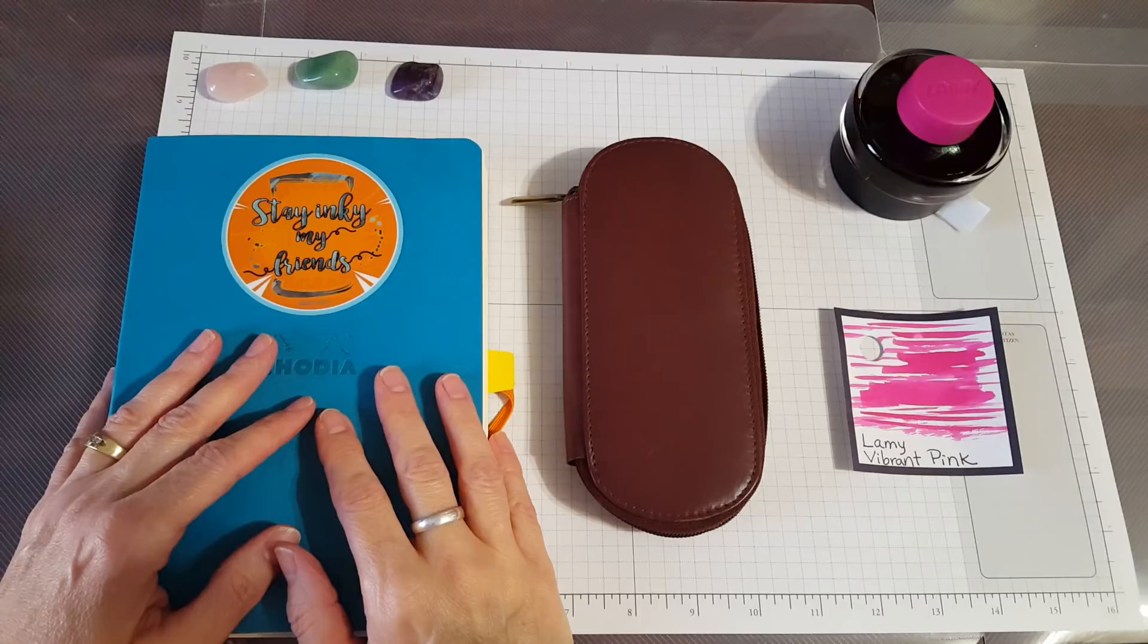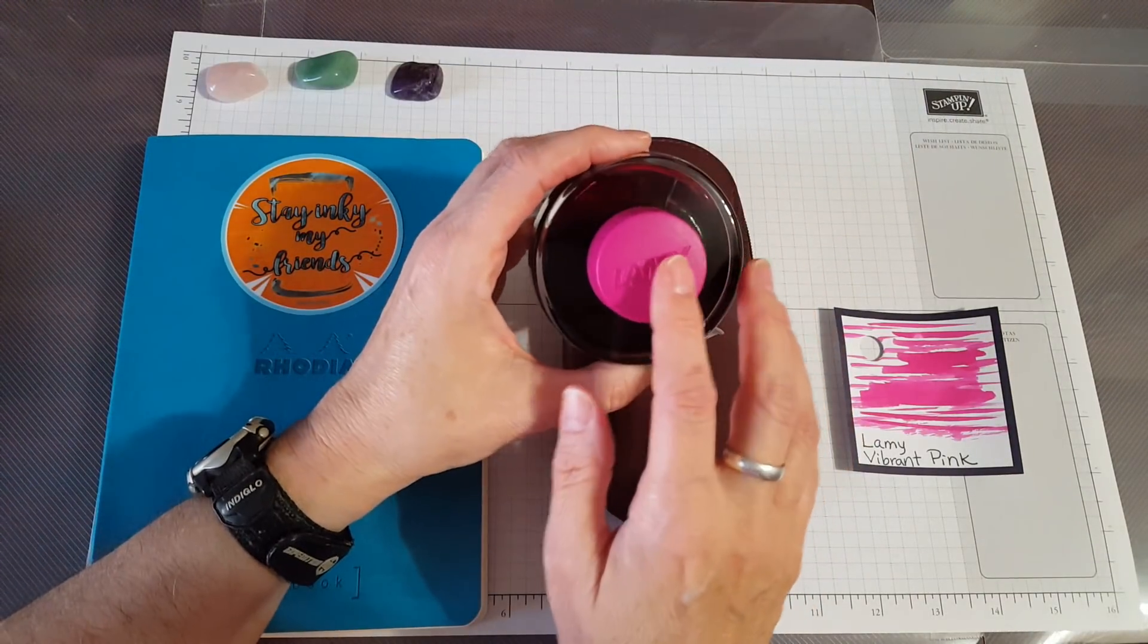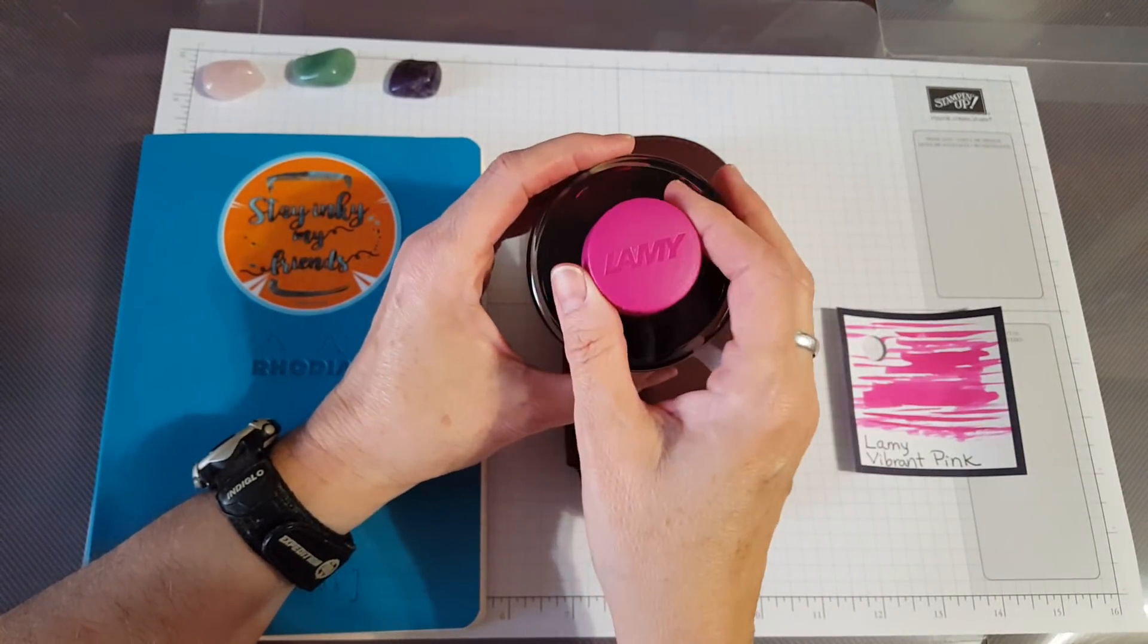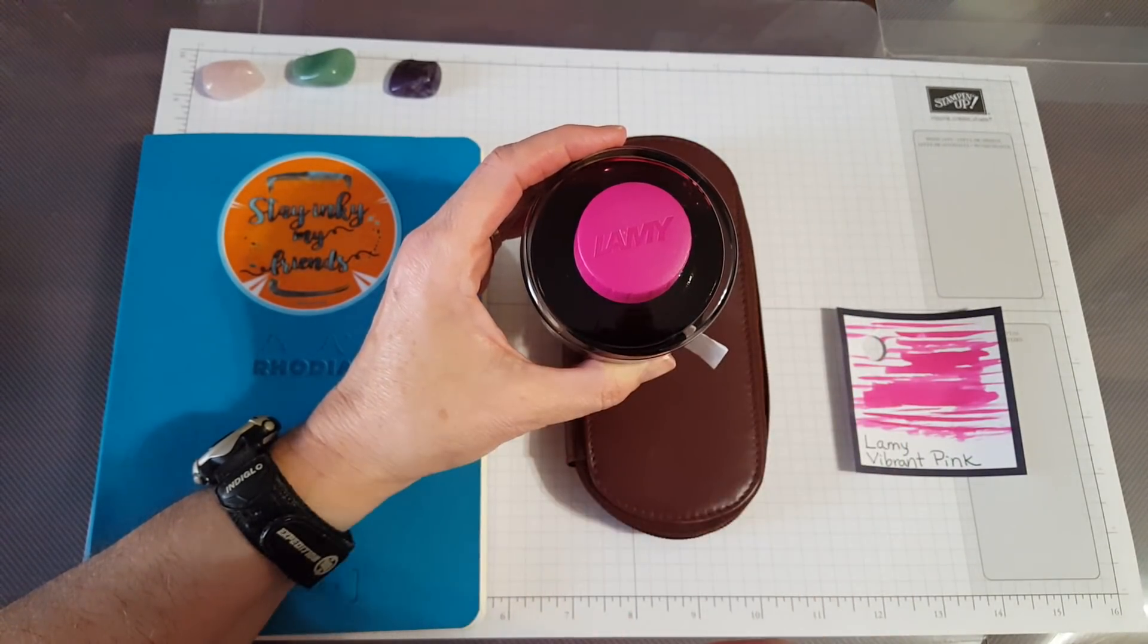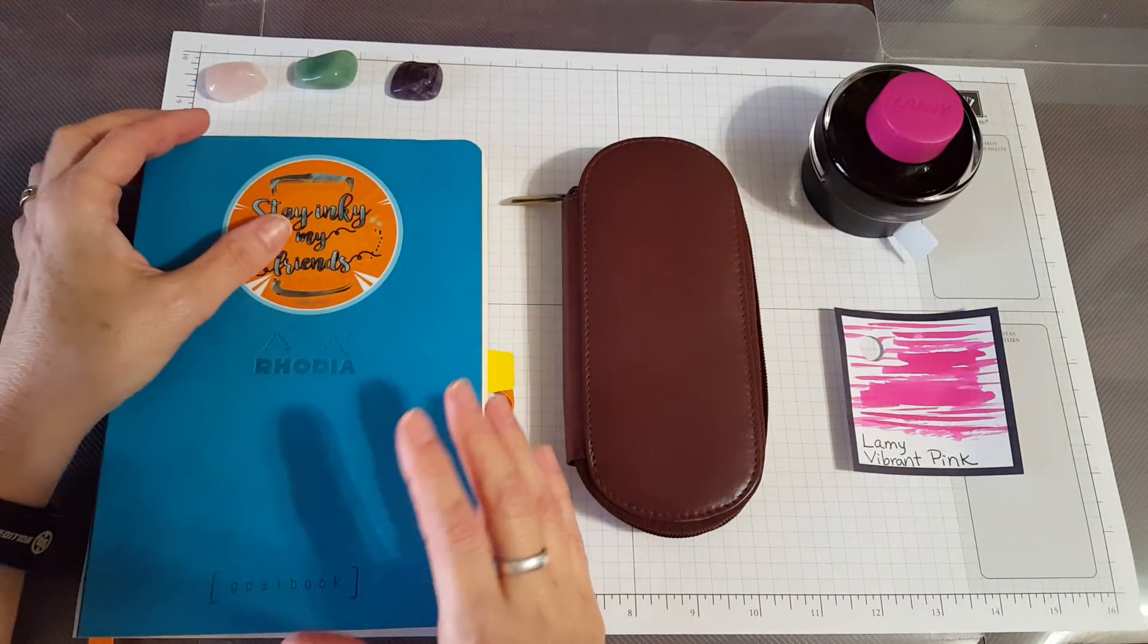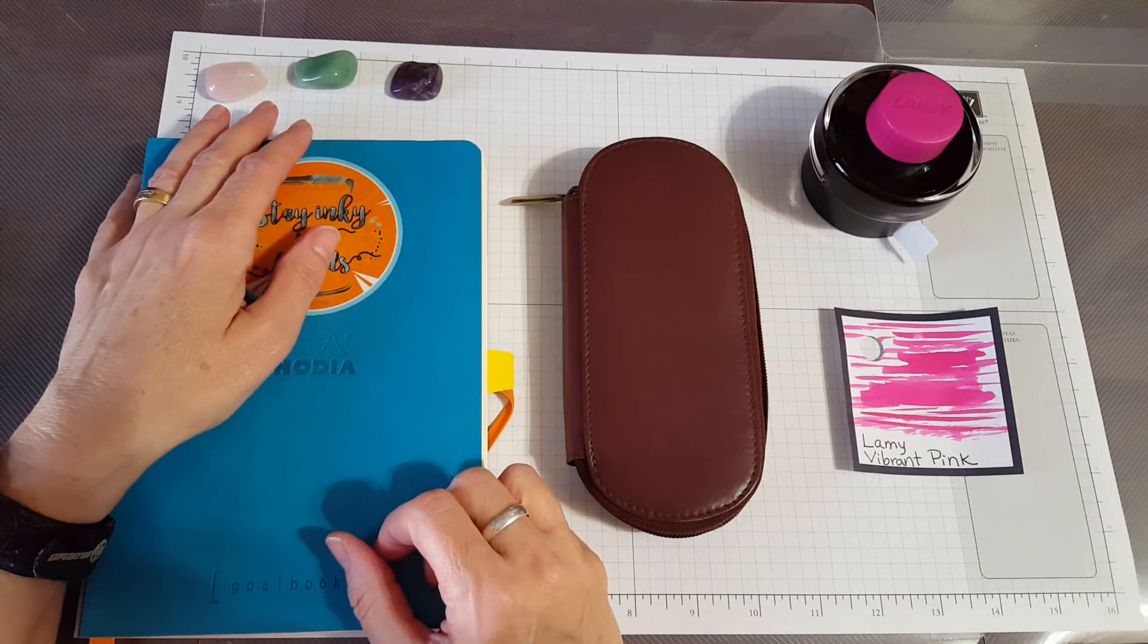What I got with my pen allowance - I did get the Lamy Vibrant Pink ink while I still could. I was really wanting to do that. It didn't call to me immediately, but after I got a pen pal letter and someone had written with it, it just looks so beautiful and it has not let me down either.